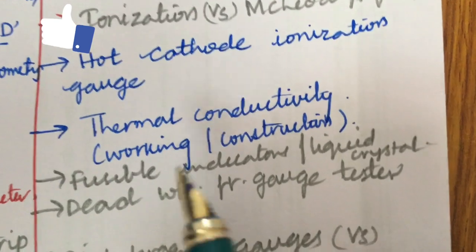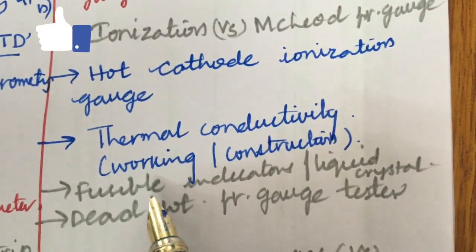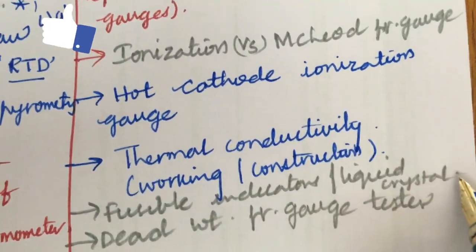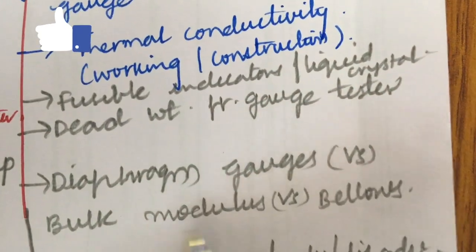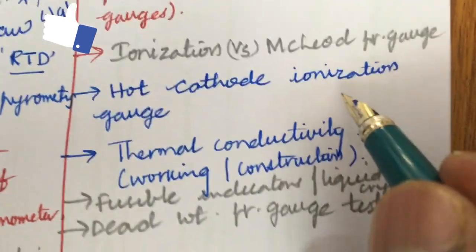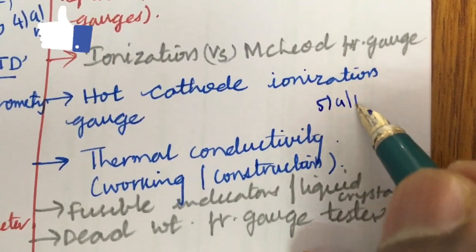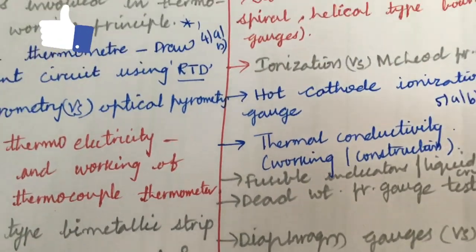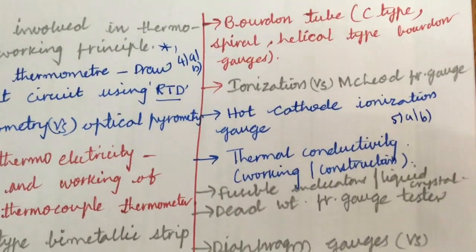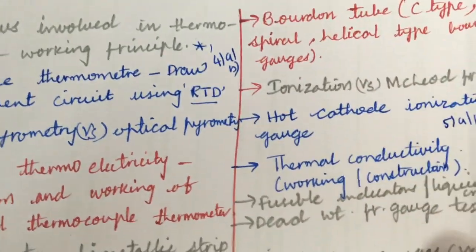Fusible indicators versus critical liquid crystal, dead weight pressure gauge tester, diaphragm gauge versus bulk modulus versus bellows. From this part we can expect 5A as well as 5B. Dear students, I mean to say that this unit is all about the measurement of temperature, measurement of pressure, its classification, working, advantages as well as disadvantages along with neat diagrams.